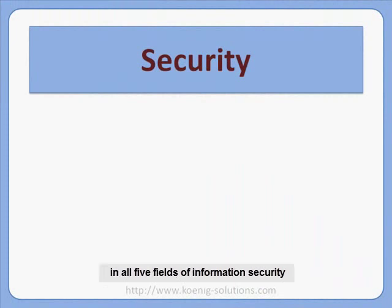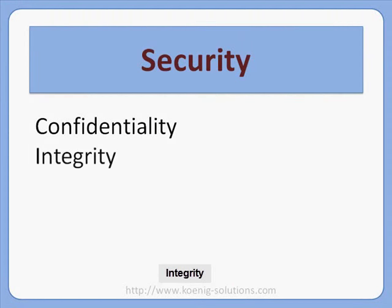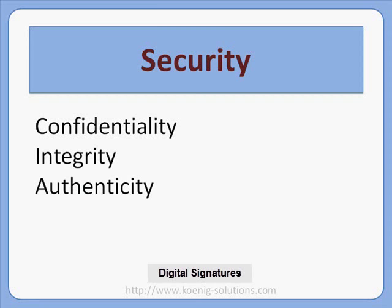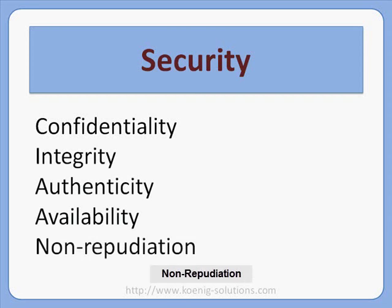Cryptography has its role in all five fields of information security. Confidentiality, as it provides encryption. Integrity — hash functions can determine modifications. Authenticity — digital signatures can verify the source of information. Availability — certificates can be used for authentication. And non-repudiation — digitally signed messages cannot be denied.